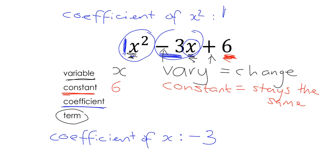So in this one here, we have got the terms x squared. That's one of the terms. The next term is minus 3x. And the last term is 6. So there are three terms in this algebraic expression.